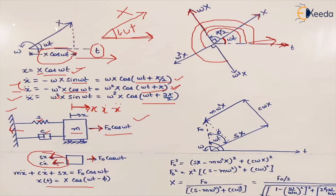The general equation of motion is mẍ + cẋ + sx = F₀ cos(ωt). The force along the axis of amplitude is the spring force sx, plotted in this direction. The damping force is associated with velocity and equals cωx, plotted at 90° to sx — this is the leading vector.